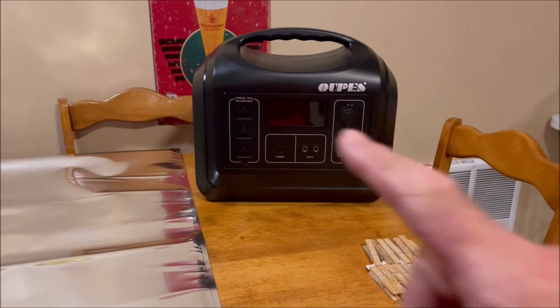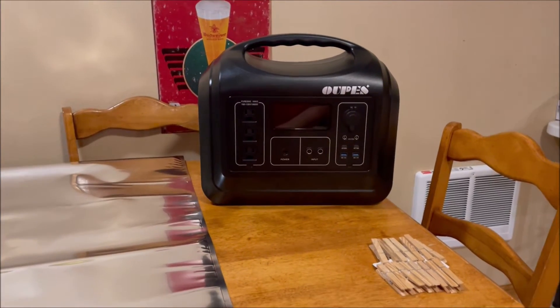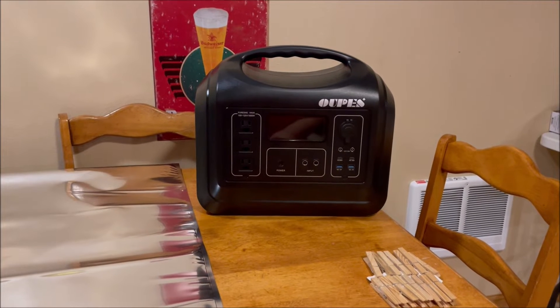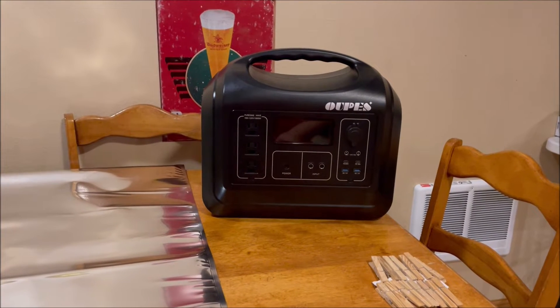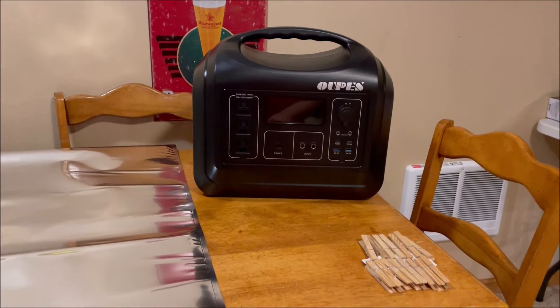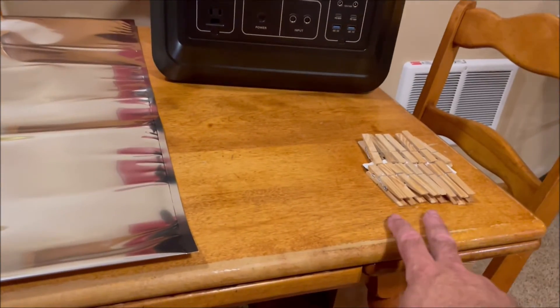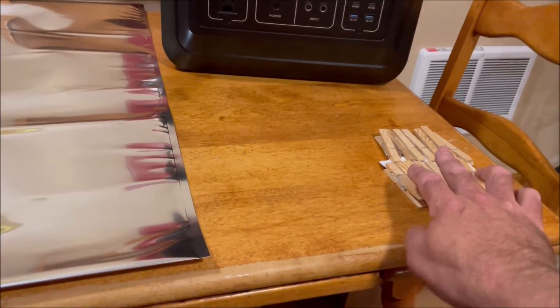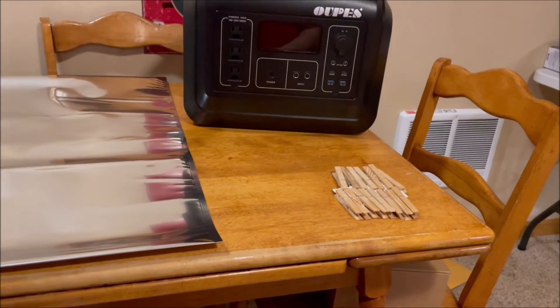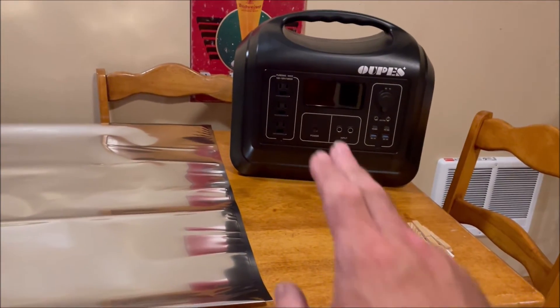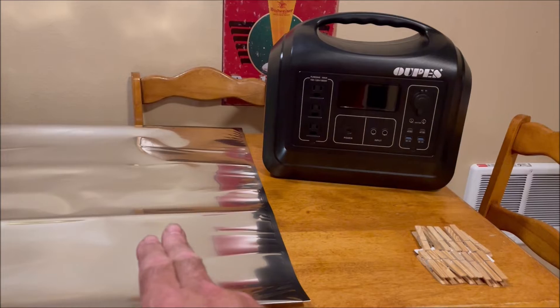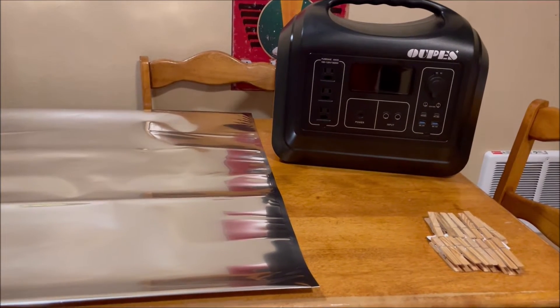We have our Upez 1800, which is one of the larger size inverter solar generators, and we have some laundry clips. What we're going to do is put our UPS into our bag, and then we'll see what's next.